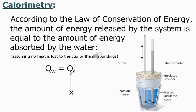The first law of thermodynamics states that energy cannot be created nor destroyed. As a result, the net energy of the universe for any process or reaction has to be zero. According to the law of conservation of energy, the amount of energy released by the system is equal to the amount of energy absorbed by the surrounding — in our case, water. So Q of the surrounding or water equals Q of the system.